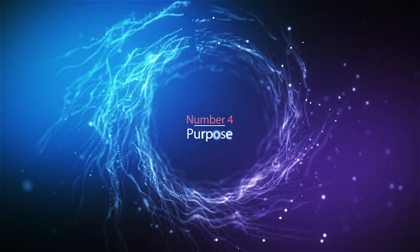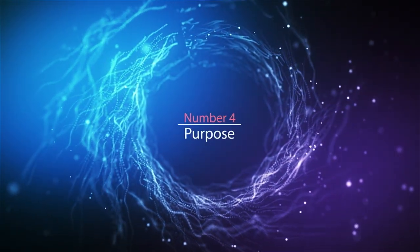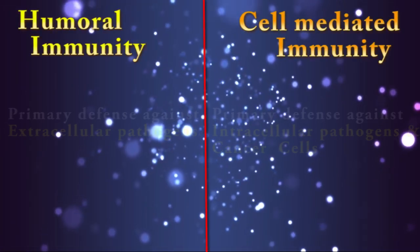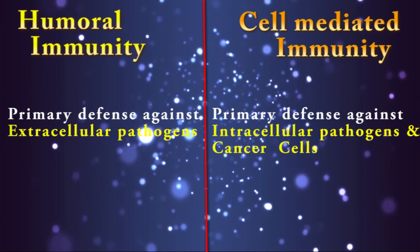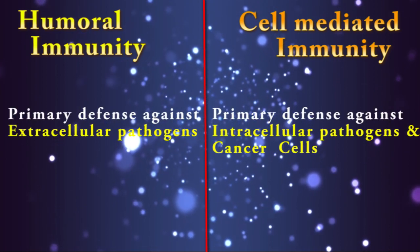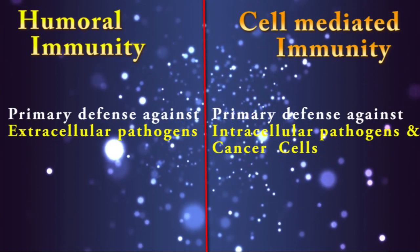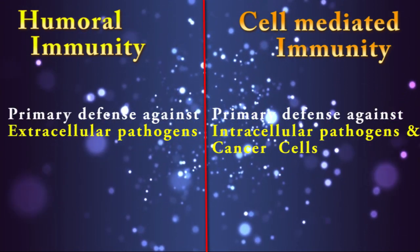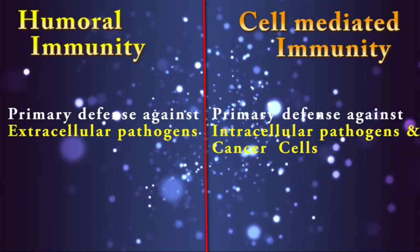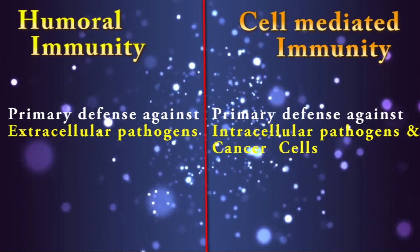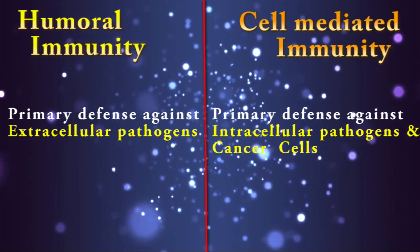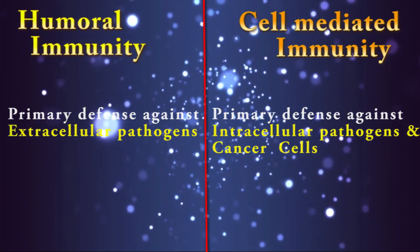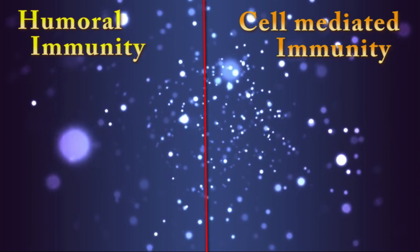Difference number 4: purpose. Humoral immunity is important as the primary defense against extracellular pathogens, but cell-mediated immunity is important as the primary defense against intracellular pathogens and cancer cells.